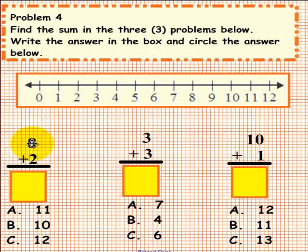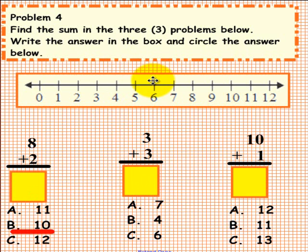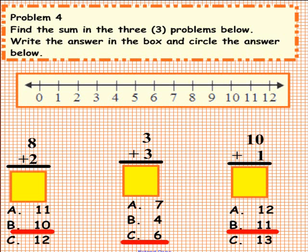Let's see what we have here. 8 plus 2 — let's find the number 8 on the number line and we are going to hop two places: 1, 2. So 8 plus 2 must be equal to 10. Next, 3 plus 3. Here is 3, and we are going to hop three places: 1, 2, 3. So 3 plus 3 must be equal to 6. And the last one, we have 10 plus 1. Here is 10, and we are going to hop one place. So 10 plus 1 must be equal to 11. If your answer matches ours, that is fantastic. Marvelous. Way to go. Please pick up an eraser and erase your answers. We would like to thank you for working with us today on addition.